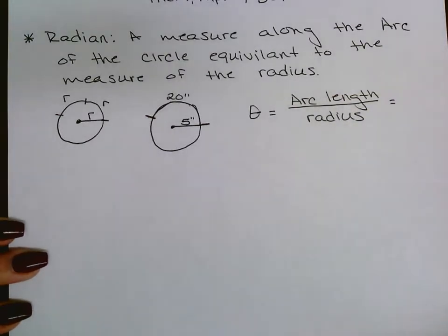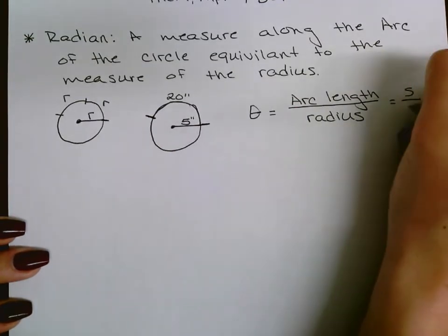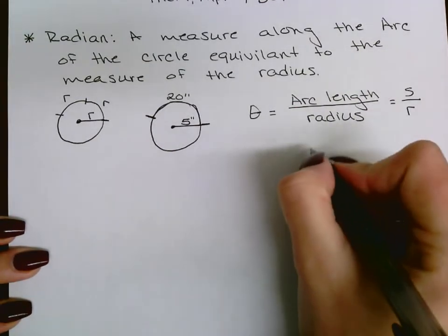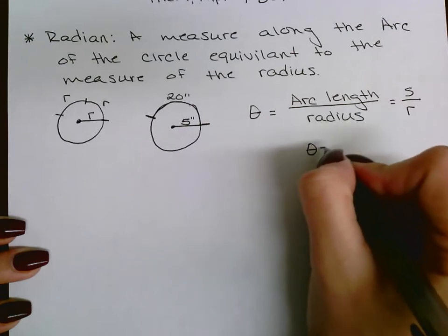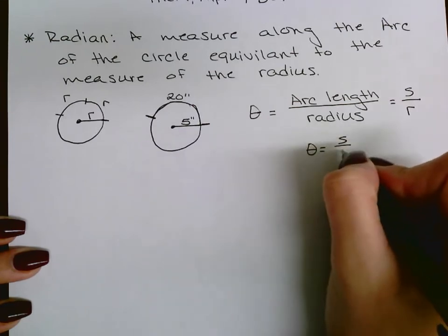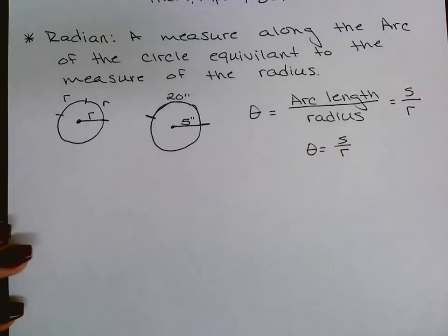Theta equals arc length divided by radius — that's one of your first main formulas. The textbook uses the letter S for arc length and R for radius, so you'll see theta equals S over R. That's the first big formula.